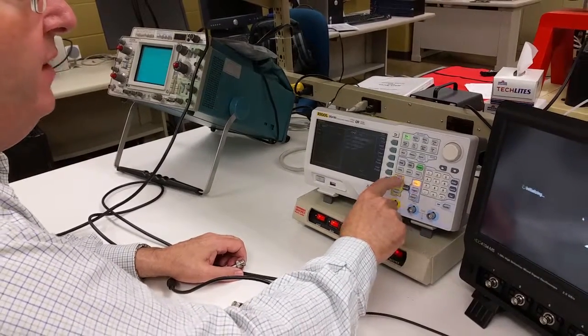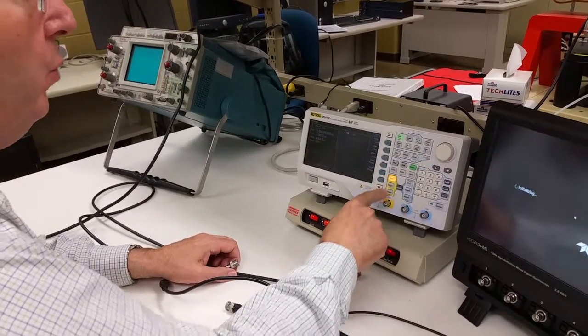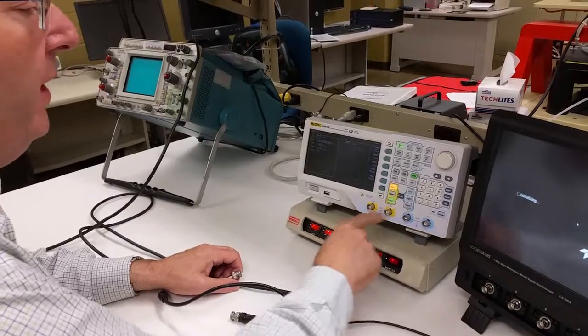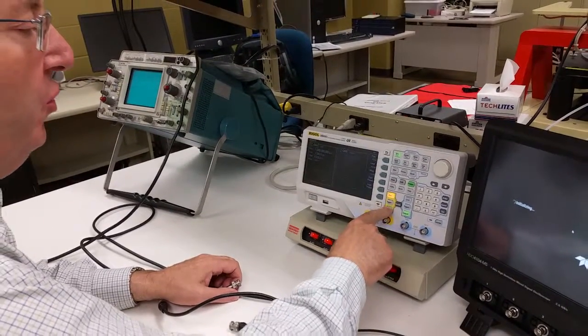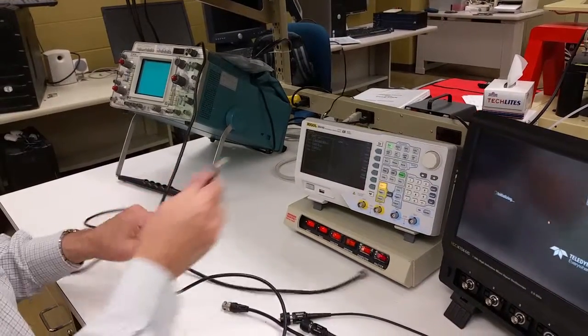So only one of these is lit at the same time because we only have one set of controls, but we can turn on the output for channel 1 and we can turn on the output for channel 2. So both of those can be on at the same time.